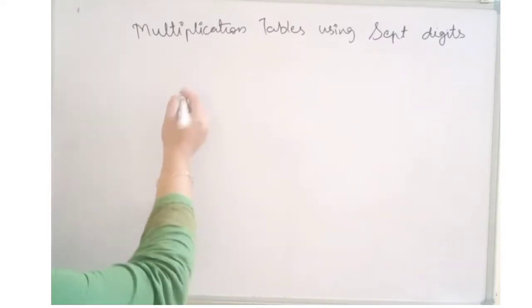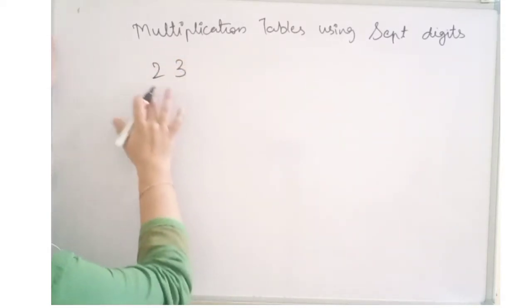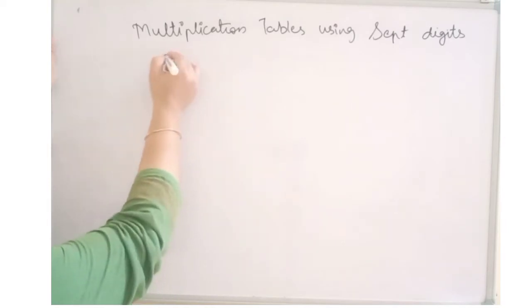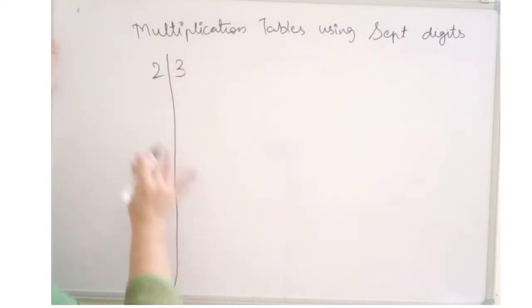If suppose we have to write a multiplication table for 23, we will do one thing. We will just separate these two digits and write a separate table for both. Let's start that.